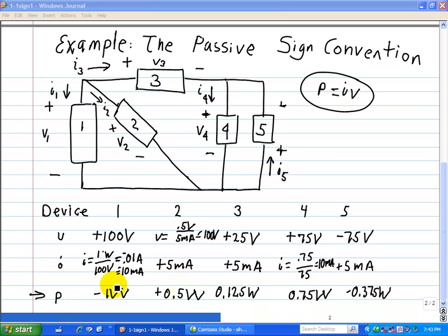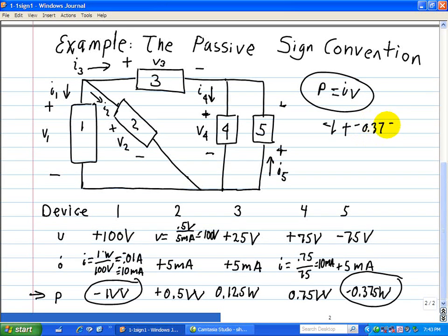As a side note, you notice here, the delivering power is negative 1 watt and negative 0.375 watts. And in any circuit, anything that's applied must get dissipated equally among the rest of the devices in the circuit. So here, we can see that negative 1 watt plus negative 0.375 watts equals negative 1.375 watts. Now, let's add up all the ones that are positive, plus 0.5, plus 0.125, and plus 0.75. And it turns out that also equals to 1.375 watts. So energy that you supply is equal to the energy dissipated across devices, in this case 2, 3, and 4, where the source is supplied by device 1 and 5.